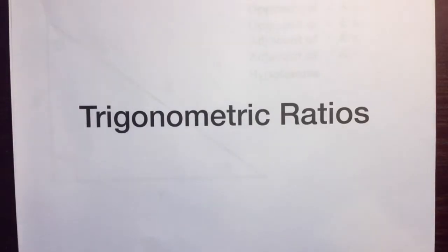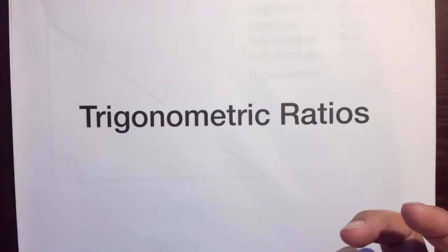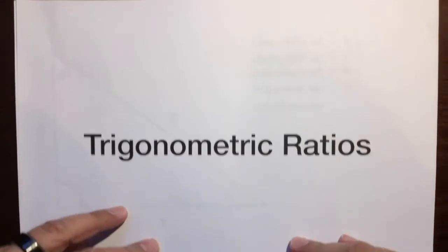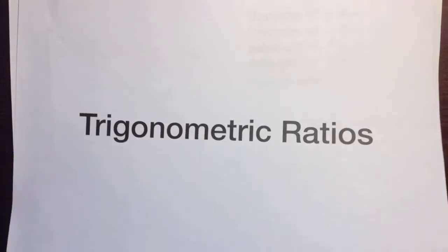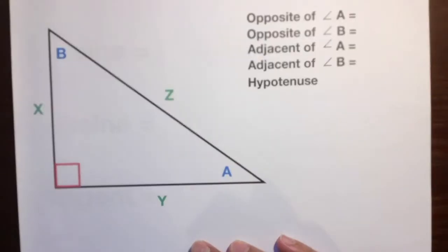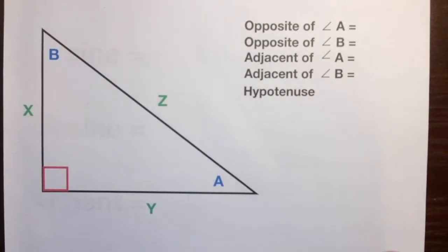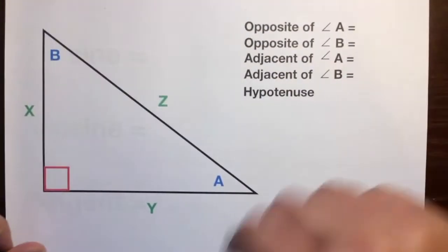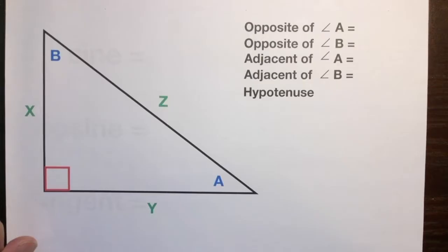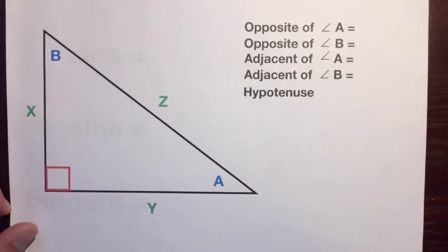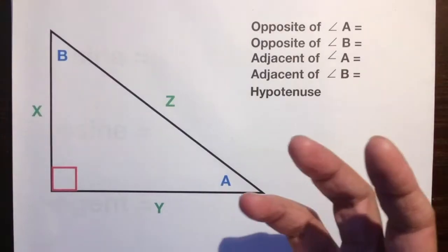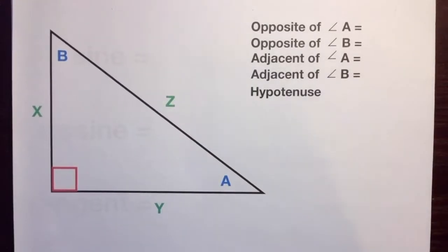So before we can do big and fancy things, we have to learn the basics. Let's learn the basics about trigonometric ratios. First things first, here are some key words that we need to know: opposite, adjacent, and hypotenuse. If you've gotten this far in geometry, you should know what one of these words means — hypotenuse.